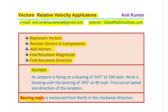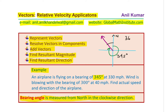Some of our viewers might like to know what a bearing angle is. Bearing angle is measured from north in the clockwise direction. So in this particular case, when we say the plane is flying on a bearing of 345 degrees, it means from north it makes an angle of 345 degrees. What remains is 360 minus 345, which is equal to 15 degrees. So this angle will be 15 degrees.